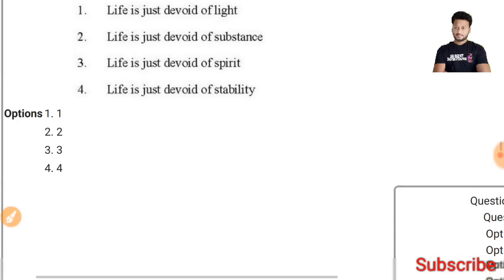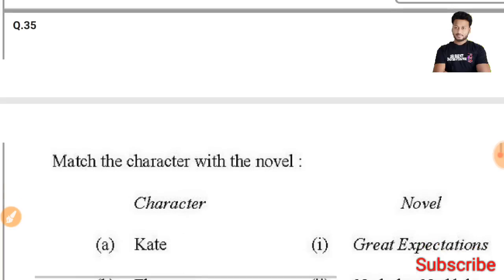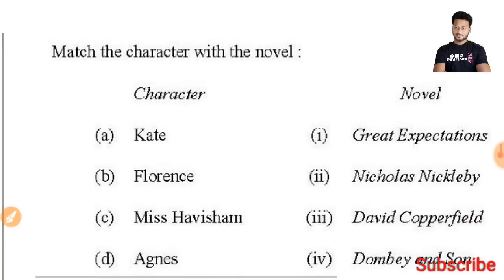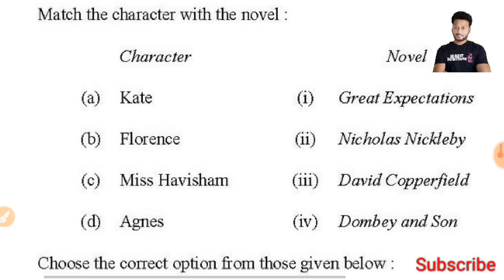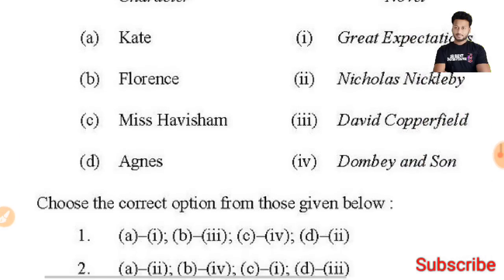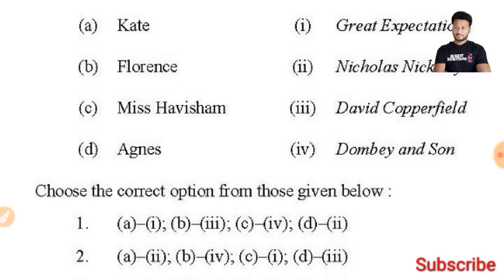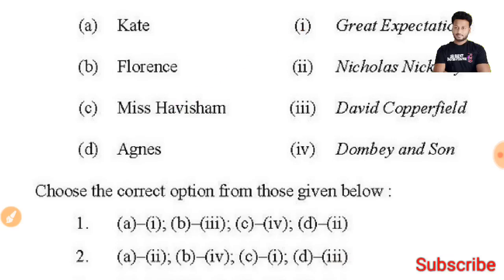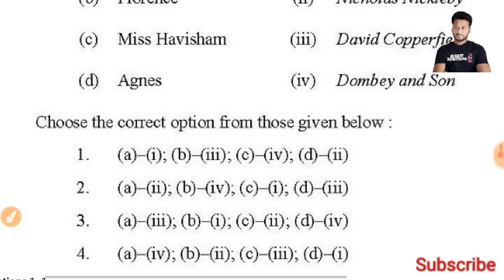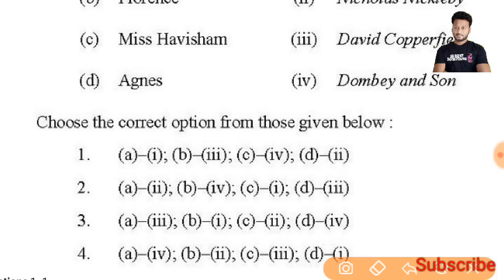Question 35: Match the character with the novel. If we know about any character that appears in a novel — for example, if I know that Miss Havisham appears in 'Great Expectations' — matching C-2-1, we find C-2-1 in the second option, so the second option will be the right answer.